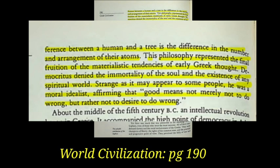The only difference between a human and a tree is the difference in the number and arrangement of their atoms. This philosophy represented the final notion of the materialistic tendencies of early Greek thought. Democritus denied the immortality of the soul and the existence of any spiritual world. Strange as it may appear to some, he was a moral idealist, affirming that good means not merely not to do wrong, but rather not to desire to do wrong. (World Civilization, page 190)